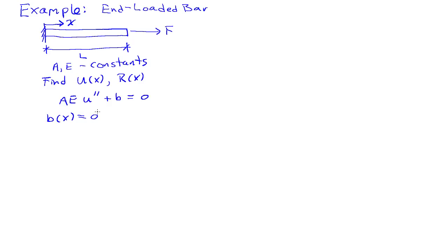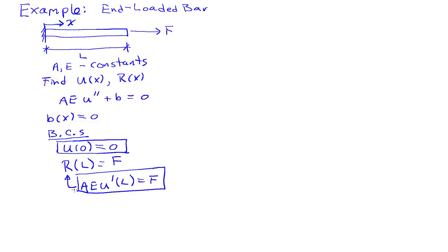There are no loads applied in the bar itself. There's only a restraint on the left side and a force on the right side. And we need boundary conditions. And so we have u of zero equals zero. And we have that r at L is equal to F. And it's convenient to re-express the force in terms of the motion. So we can write that as AE u prime of L. So that equals F.